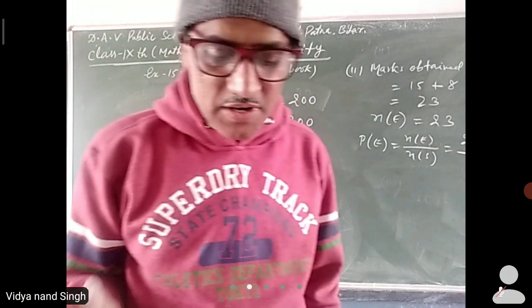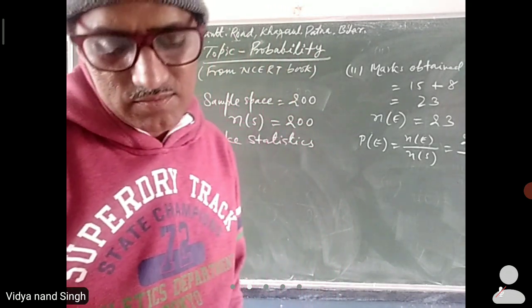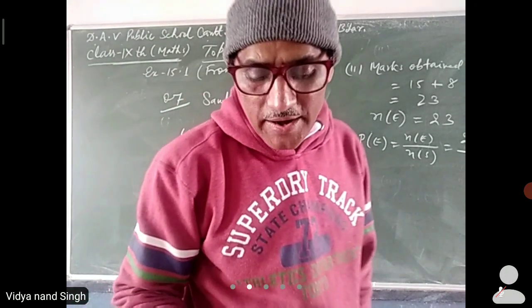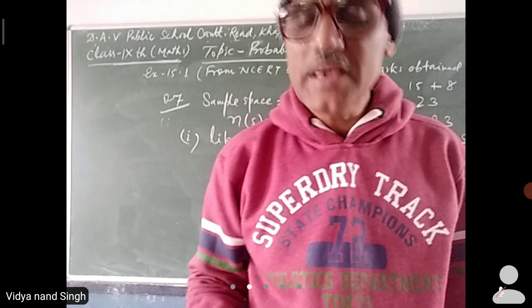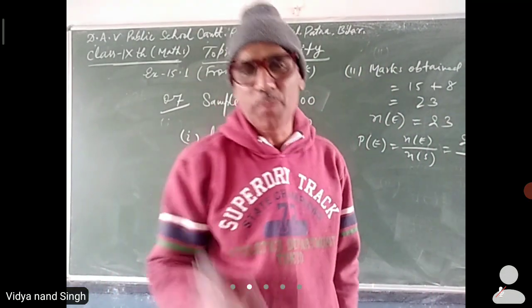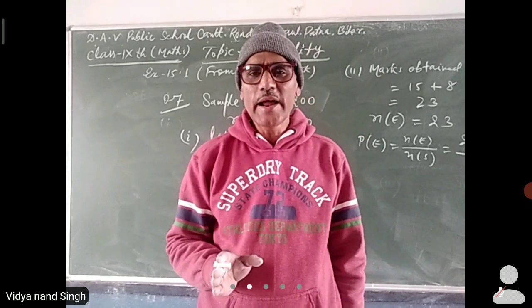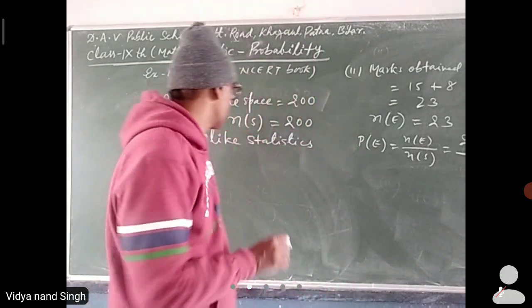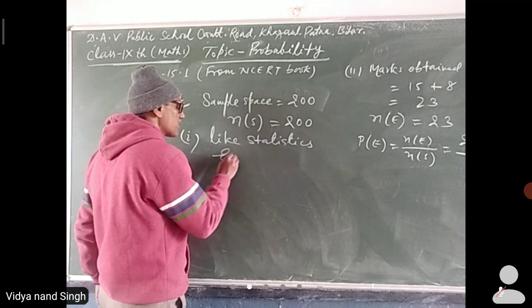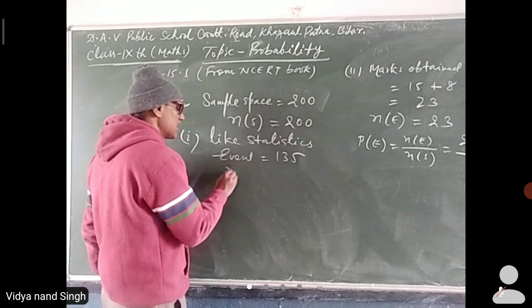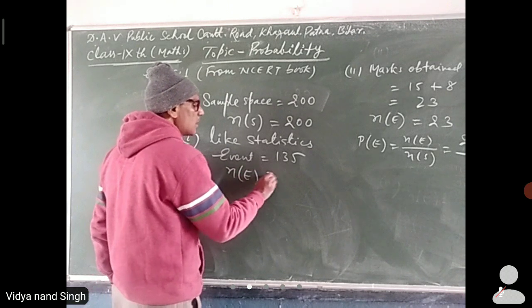Statistics ko kitne student like kia? How many students like statistics? 135. The number of event is 135. Number of E is 135.